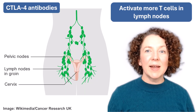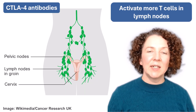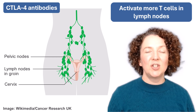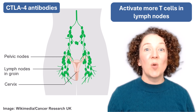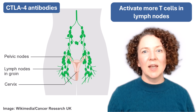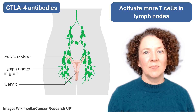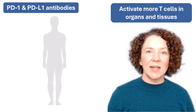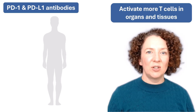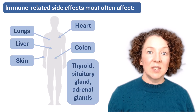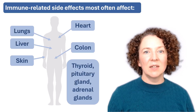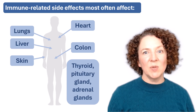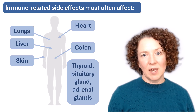CTLA-4 antibodies tend to activate T cells that are in lymph nodes — bean-shaped pockets of tissue found throughout our body where white blood cells talk to each other and coordinate their actions. PD-1 and PD-L1 antibodies generally activate T cells out in the organs and tissues, places like the lungs, the skin and the gut. This is why immune-related side effects of checkpoint inhibitors often affect those same tissues.